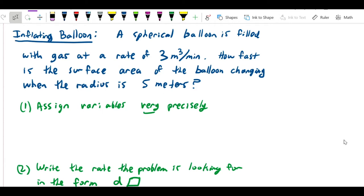Let's do the spherical balloon. We have a spherical balloon that's being filled with gas at a rate of 3 cubic meters per minute. How fast is the surface area of the balloon changing when the radius is 5 meters?